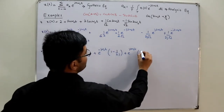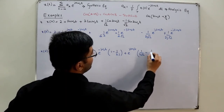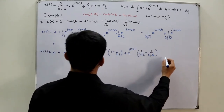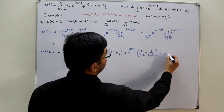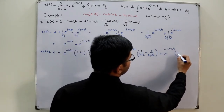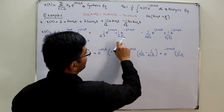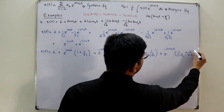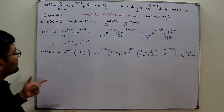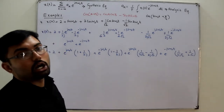Collecting the e^(j2ω₀t) coefficient: 1/(2√2) − 1/(2j√2). For e^(−j2ω₀t) the coefficient is 1/(2√2) + 1/(2j√2). Checking: 1 + 1/(2j), 1 − 1/(2j), 1/(2√2) − 1/(2j√2), 1/(2√2) + 1/(2j√2) — yes, this is absolutely correct. This is the Fourier series representation of this signal.